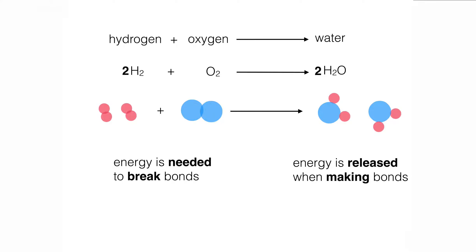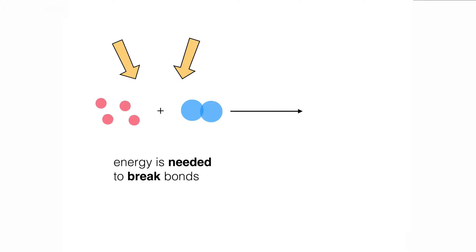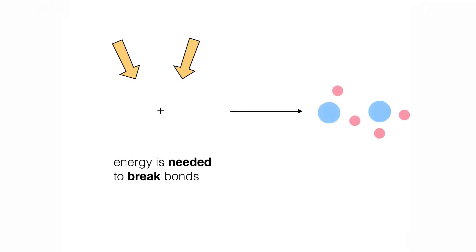That is going to be the key thing to help us work out the energy changes for the reactions we're about to look at. So let's break it down a little bit more. Here we've got our reactants, and energy is needed to break the bonds here, as you can see. Those bonds are being broken with the input of energy, and those atoms are now apart. They can be reformed into the products — in this case, the product is water. Energy is released when making the bonds.